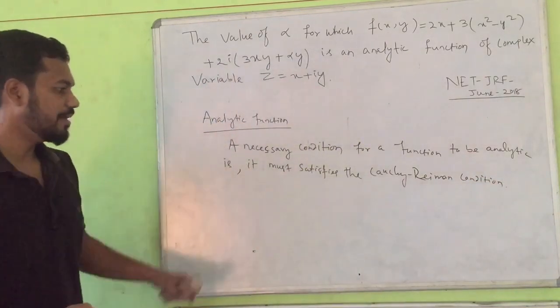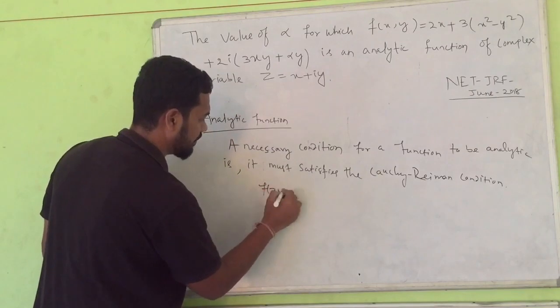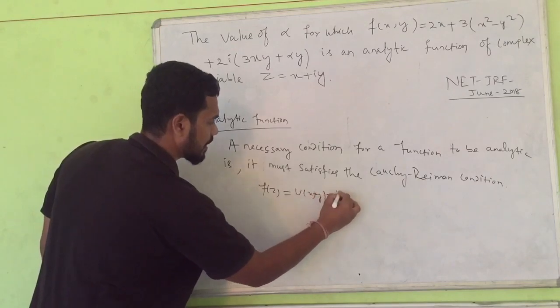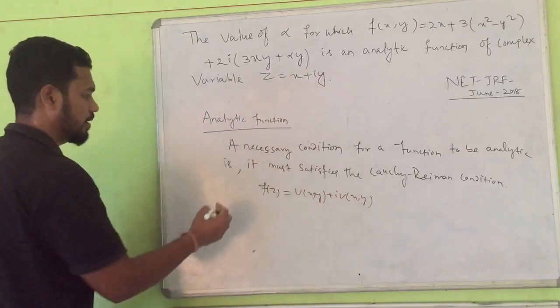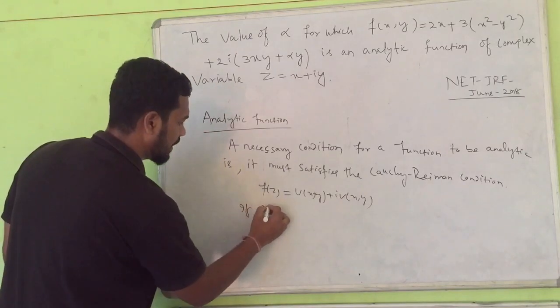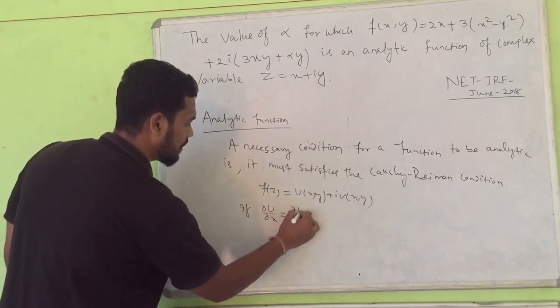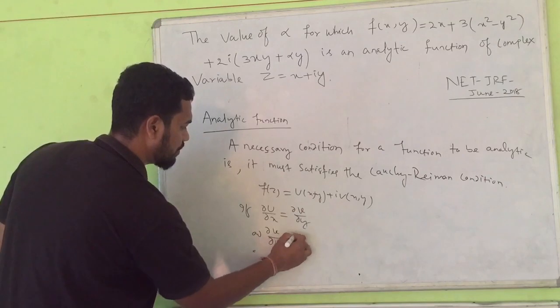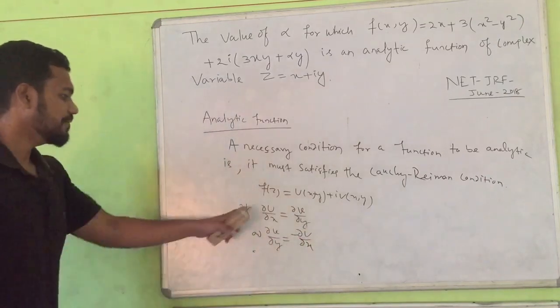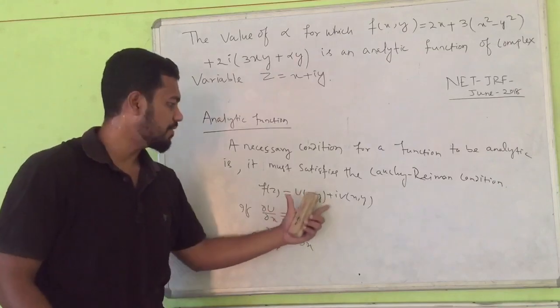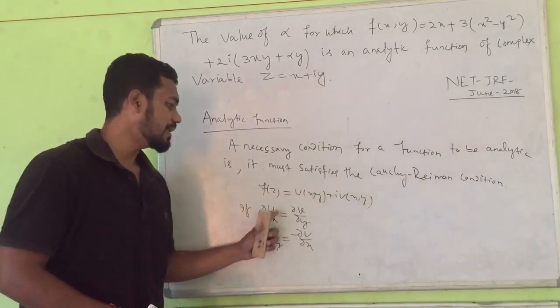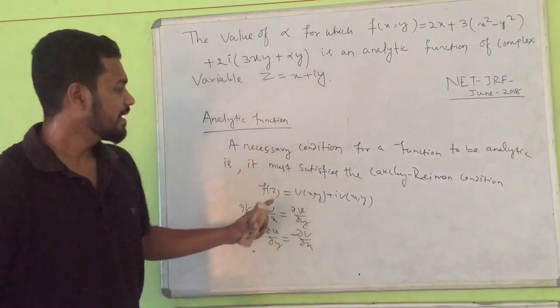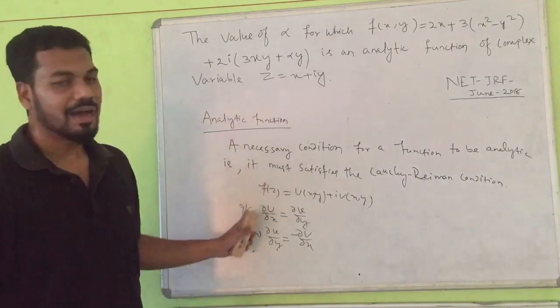What is Cauchy-Riemann condition? For a complex function f(z) which is of the form u(x,y) plus i v(x,y), if del u upon del x equals del v upon del y and del u upon del y equals minus del v upon del x - if these four partial derivatives exist for a function and satisfy this, then the function f(z) is said to be analytic.